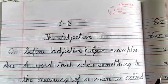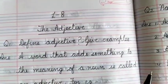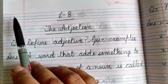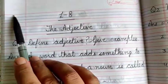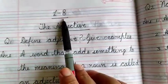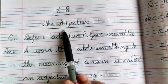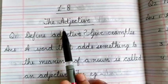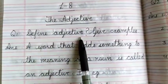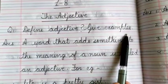Now children, take out your English 1 copies. Take out a new page. Write the date on the left side of the margin. Write lesson 8 on the first line, the name of the lesson — The Adjective — on the second line. Question number 1: Define adjective. Give examples.